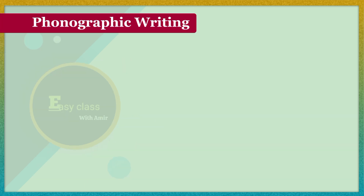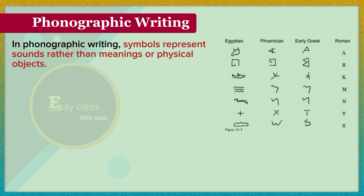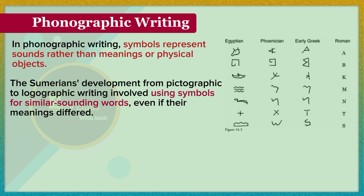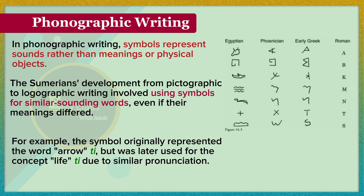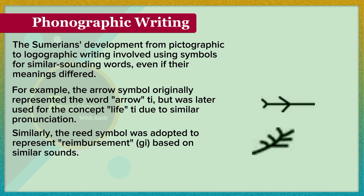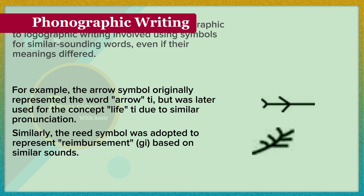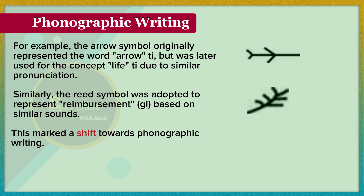Phonographic writing. In phonographic writing, symbols represent sounds rather than meanings or physical objects. The Sumerians' development from pictographic to logographic writing involved using symbols for similar-sounding words, even if their meanings differ. For example, the arrow symbol originally represented the word arrow, ti, but was later used for the concept life, ti, due to similar pronunciation. Similarly, the reed symbol was adopted to represent reimbursement, gi, based on similar sounds. This marked a shift towards phonographic writing.